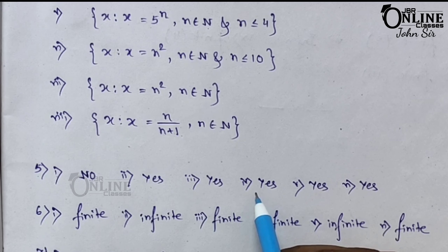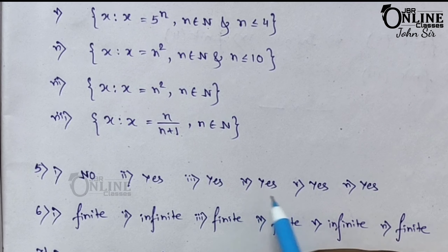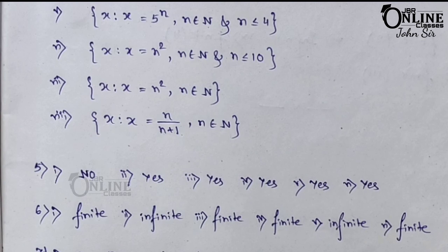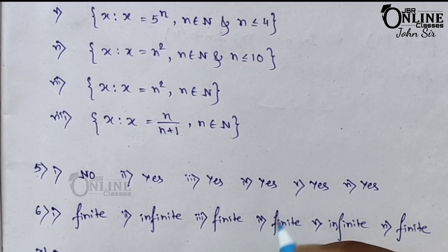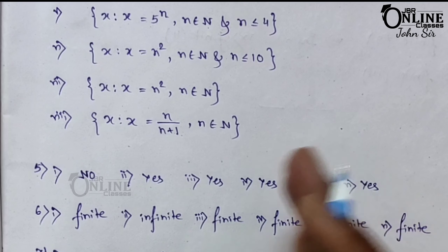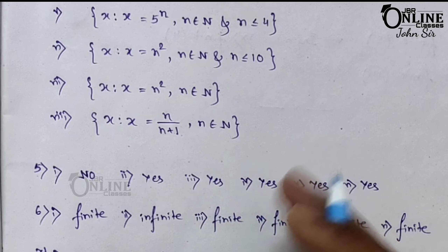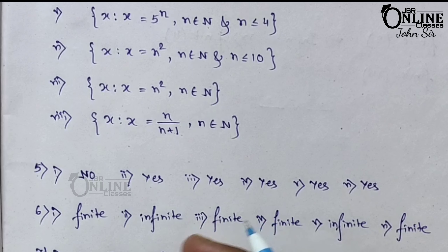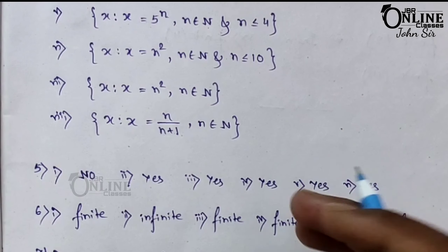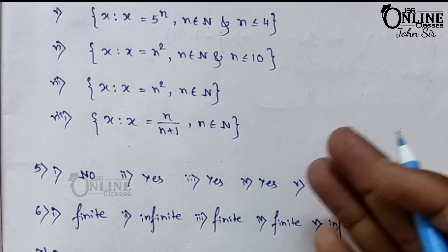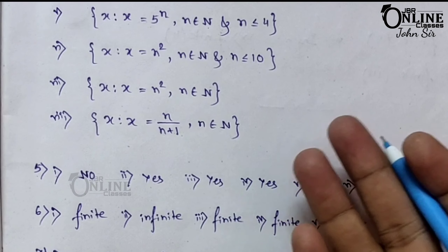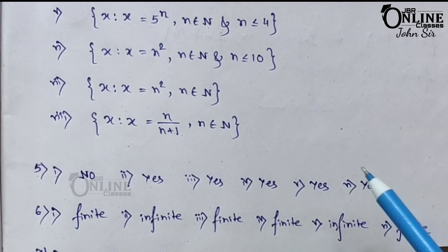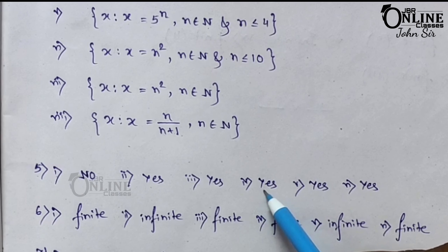Number 4: x such that x belongs to N, x < 5, and x > 8. How can x be less than 5 and also greater than 8 at the same time? Values less than 5 are 1, 2, 3, 4 — these cannot equal 8, 9, 10. So this is a null set.